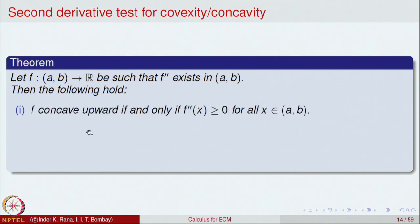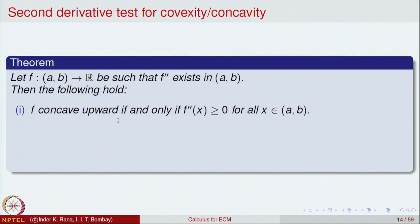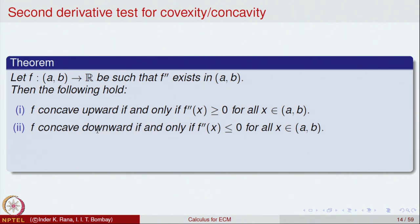Then the following hold. First: f is concave upward if and only if f'' ≥ 0 — a two-way condition: f concave upward implies f'' ≥ 0, and conversely f'' ≥ 0 implies f is concave upward. Second: f is concave downward if and only if f'' ≤ 0 for all points in (a, b). These conditions pertain to the property of the derivative throughout the whole interval.